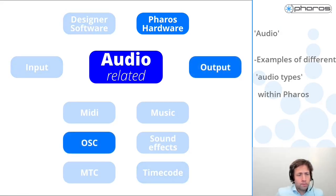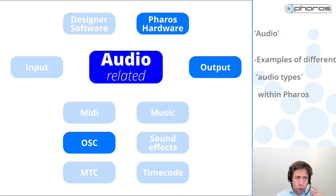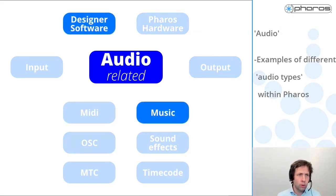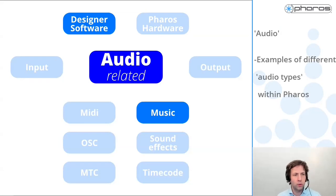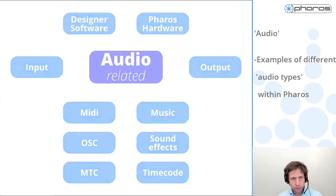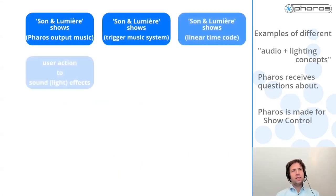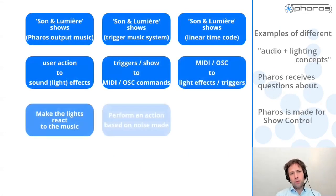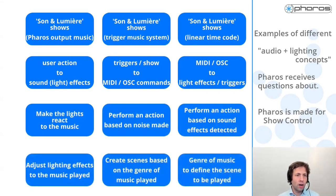There's also something like: based on an OSC trigger, I want the Pharos hardware to output audio, or I want to output OSC triggers from the Pharos hardware - this is something we can meet. Or: I want to use music in Designer because I want to program a show against a song. Yes, we can do that. But not all the combinations I can make from this screen would be valid within a Pharos system.